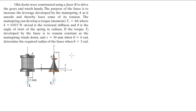Let's work through this problem: all clocks were constructed using a fusee (B, shown here) to drive the gears and watch hands. The purpose of the fusee is to increase the leverage developed by the main spring (A) as it uncoils and thereby loses some of its tension.